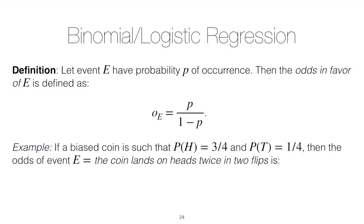Suppose we have an event E and the probability that E occurs is p. Then we can define the odds in favor of E in the following way: O_E, the odds, is just the ratio of probability that E will occur to the probability that E will not occur.